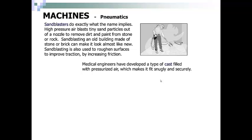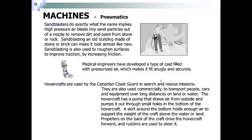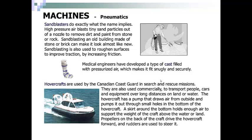Medical engineers have developed a type of cast filled with pressurized air, which make it fit snugly and securely. Hovercrafts are used by the Canadian Coast Guard in search and rescue missions. They are also used commercially to transport people, cars, and equipment over long distances on land or water. The hovercraft has a pump that draws air from outside and pumps it out through small holes in the bottom of the hovercraft. A skirt around the bottom holds enough air to support the weight of the aircraft above the land or water. Propellers on the back of the craft drive the hovercraft forward and rudders are used to steer it.